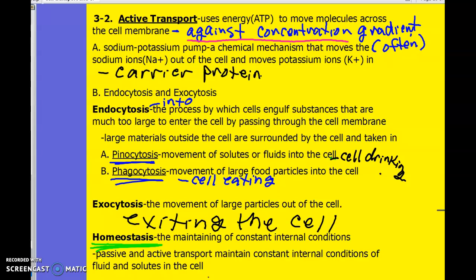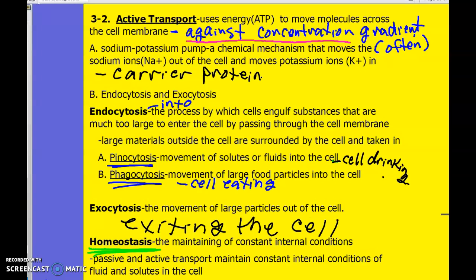So remember we said passive transport, like a passive person is someone who's just pretty chill and doesn't get excited about things, doesn't use up a lot of energy. Where someone who's active uses a lot of energy, maybe it's pretty excitable and those kinds of qualities.